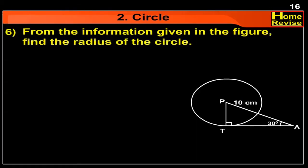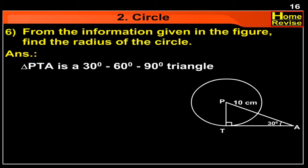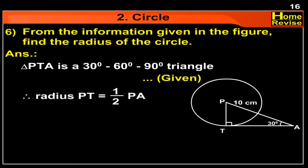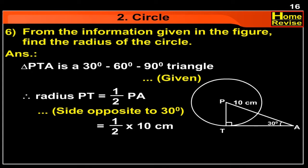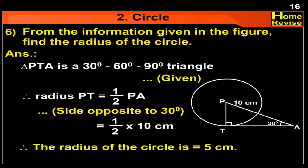From the information given in the figure, find the radius of this circle. Answer: Triangle PTA is a 30-60-90 degree triangle. The radius PT is half of PA, as the side opposite to 30 degrees. So it is half of 10 cm. Therefore, the radius of this circle is 5 cm.